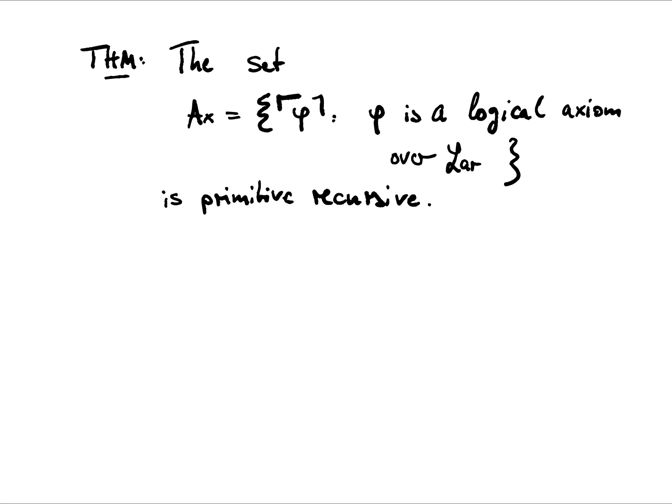And summing up now, we have the following theorem: The set of all Gödel numbers of logical axioms over the language LR arithmetic is primitive recursive. And again, we can replace the language of arithmetic here by any other finite language, and end up adjusting our initial coding scheme accordingly. So now we have finished the arithmetization process for all basic syntactical notions, including the axioms.